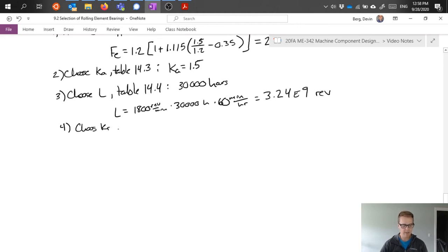Next, we would want to pick our reliability factor. We already said that we're going to assume 90% reliability, and that gives us a reliability factor pulled from the book of 1.